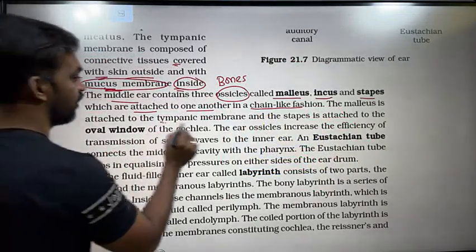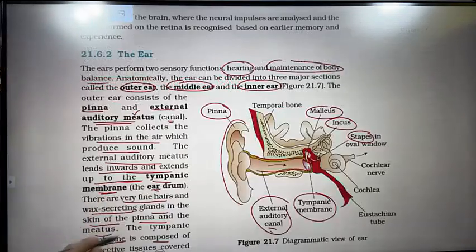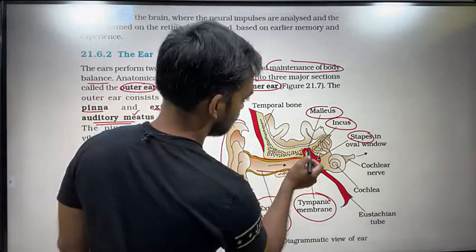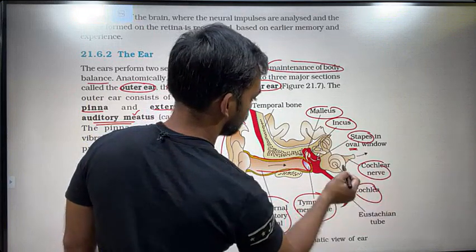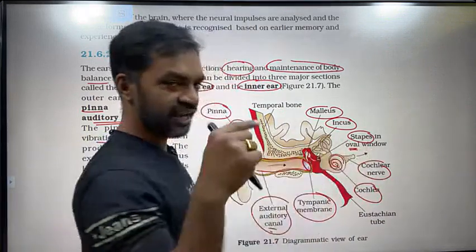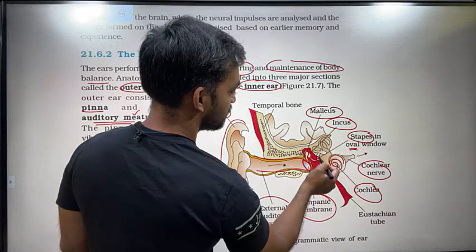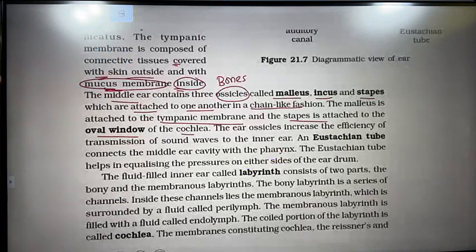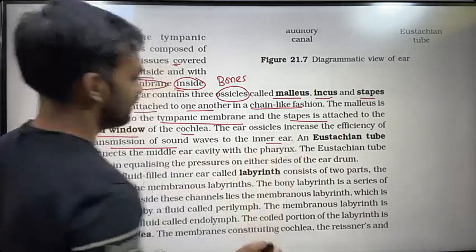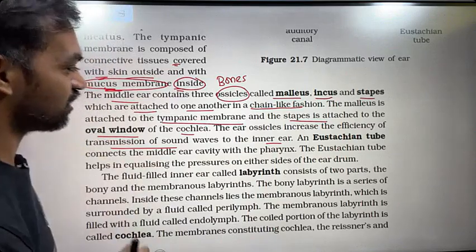The malleus is attached to the tympanic membrane, and the stapes is attached to the oval window of the cochlea. The cochlea is attached at the oval window. The ossicles help in the transmission of sound waves to the inner ear.